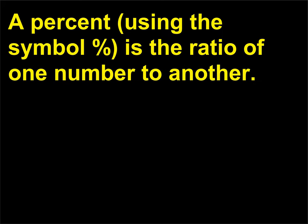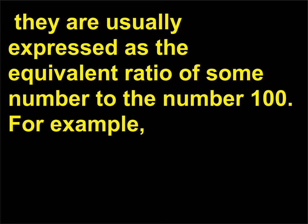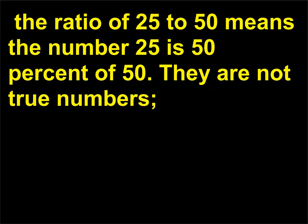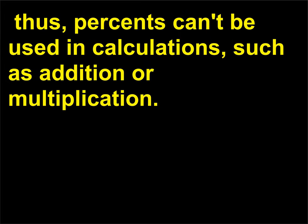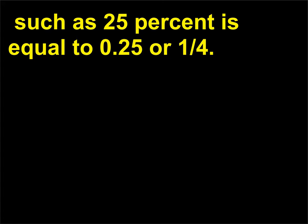A percent, using the symbol %, is the ratio of one number to another. Percents are quantitative terms in which n percent of a number is n one-hundredths of the number. They are usually expressed as the equivalent ratio of some number to the number one hundred. For example, the ratio of 25 to 50 means the number 25 is 50% of 50. They are not true numbers; thus percents can't be used in calculations such as addition or multiplication, but operations can be conducted with percents when they are translated into ratios and fractions, such as 25% is equal to 0.25 or one-fourth.